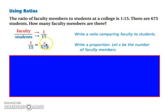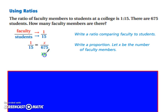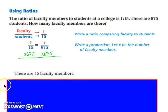And then solve. We want to get x by itself, so we're going to multiply both sides of the equation by 675 and then simplify. When you have 675 times 1 divided by 15, it's essentially the same as saying 675 divided by 15. And when you do so, you end up with 45 faculty members.